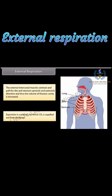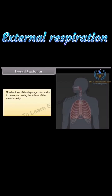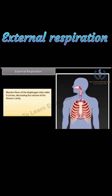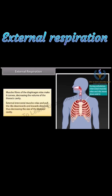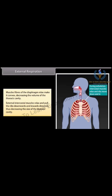Expiration is a process by which CO2 is expelled out from the lungs. Muscle fibers of the diaphragm relax, making it convex, decreasing the volume of the thoracic cavity. The external intercostal muscles relax and pull the ribs downwards and inwards, thus decreasing the size of the thoracic cavity.